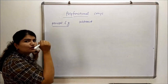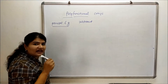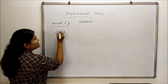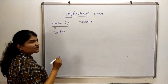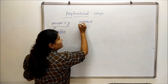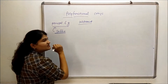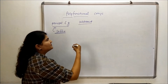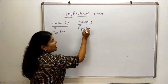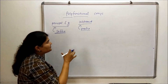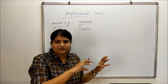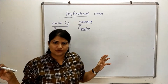The higher priority functional group will always be considered as the principal functional group, and the lower priority functional group will be considered as substituent. The principal functional group will be included in the IUPAC name in the form of a suffix, and the substituent functional groups of lower priority will be included in the form of prefixes. We have to know which functional group is given which suffix and which prefix.